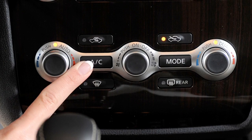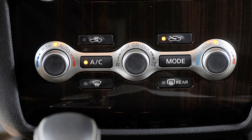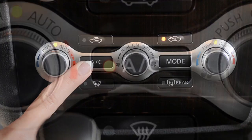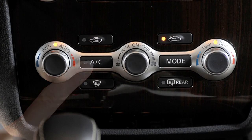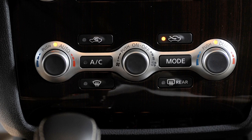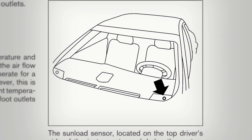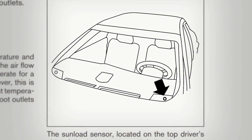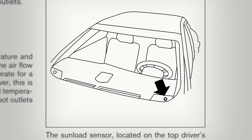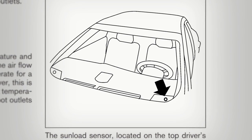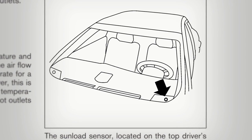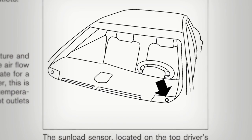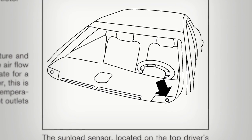Press the AC button to turn the air conditioning on. An indicator light will illuminate. Press again to turn off. There is a temperature sensor located on top of the dashboard, near the windshield, that helps regulate the automatic climate control settings. Please keep this area clear of papers and other materials.